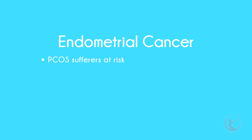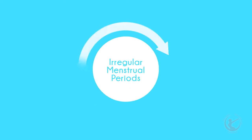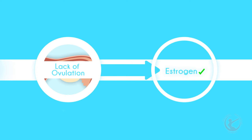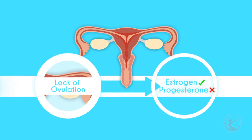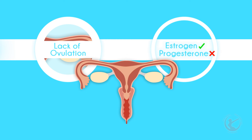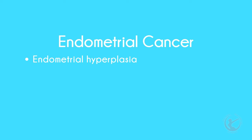Endometrial cancer: women with PCOS are also at risk for endometrial cancer. Irregular menstrual periods and lack of ovulation cause women to produce the hormone oestrogen but not the hormone progesterone. Progesterone causes the lining of the womb to shed each month as a menstrual period. Without progesterone, the endometrium becomes thick, which can cause heavier irregular bleeding. Over time, this can lead to endometrial hyperplasia — when the lining grows too much — and eventually cancer.